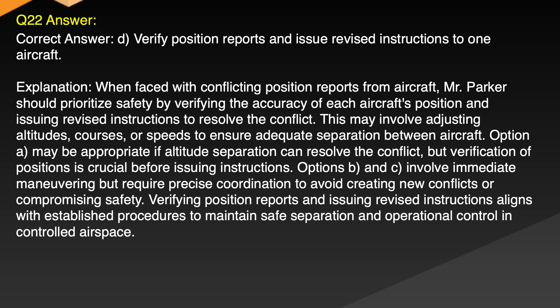Explanation: When faced with conflicting position reports from aircraft, Mr. Parker should prioritize safety by verifying the accuracy of each aircraft's position and issuing revised instructions to resolve the conflict. This may involve adjusting altitudes, courses or speeds to ensure adequate separation between aircraft. Option A may be appropriate if altitude separation can resolve the conflict, but verification of positions is crucial before issuing instructions. Options B and C involve immediate manoeuvring but require precise coordination to avoid creating new conflicts. Verifying position reports and issuing revised instructions aligns with established procedures to maintain safe separation and operational control in controlled airspace.